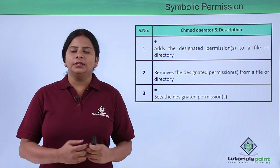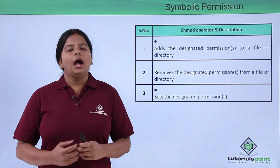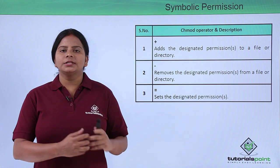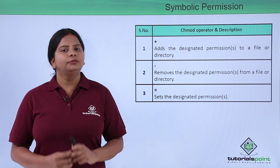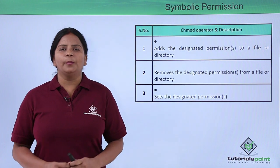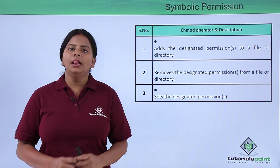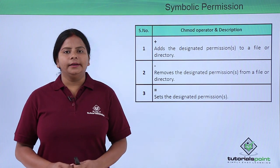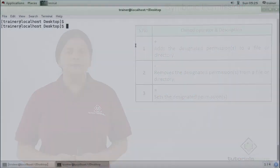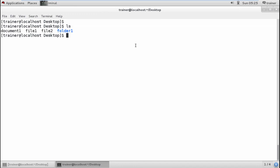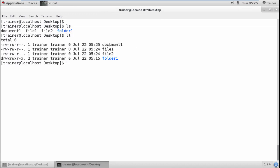Let us now see in the terminal how we can use this symbolic method for changing the permission of a file in Linux. On the desktop we have multiple files, and we can use a listing command to check the permissions of files in the directory.